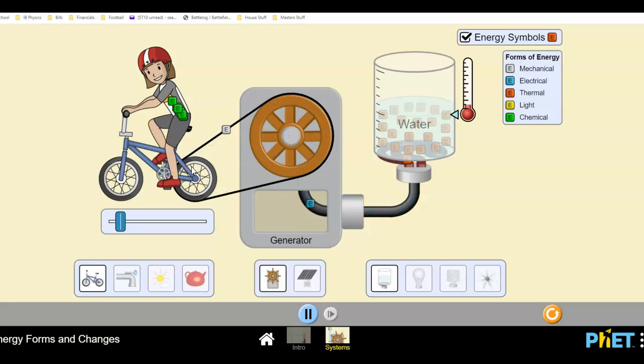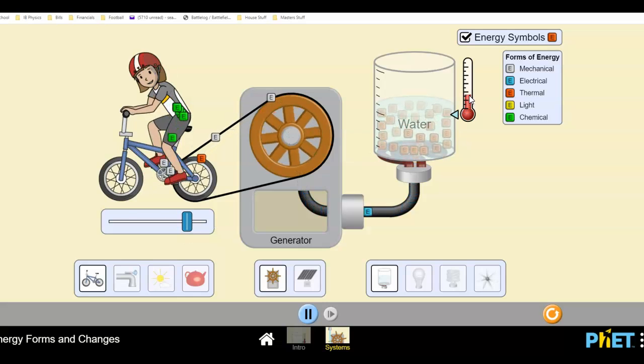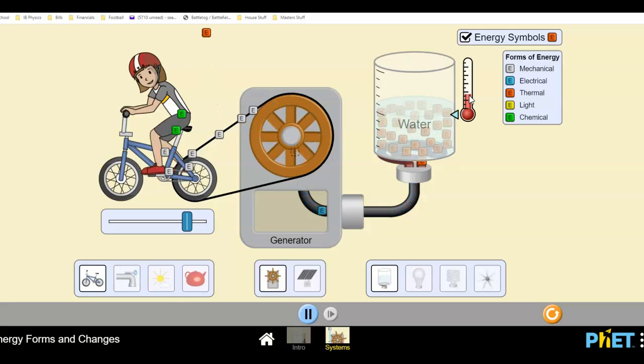Okay, as she pedals, that mechanical energy is used to turn the turbine on a generator, and a generator takes mechanical energy and turns it into electrical energy. And so, you can see the gray block becomes a blue block, that's the electrical energy, and then it goes into a heater, and it's used to heat up the water, which gains thermal energy. And so, over time, you'll see the temperature of the water increase. Okay, now, I can make her pedal faster. Okay, so as she pedals faster, you'll slowly see the temperature increase over here.